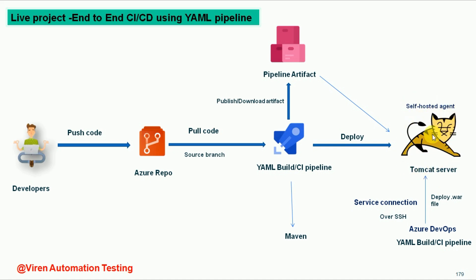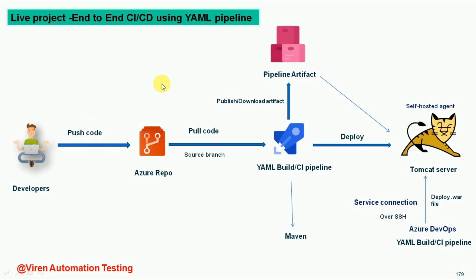Our Tomcat server is ready to deploy the war files and also behaves like a self-hosted agent. This is the AWS EC2 instance machine where we are going to set up all these things. Finally we will be able to access the .war files and our application — once the war file is deployed to the webapps folder correctly, we can access the application by providing the IP address of the Linux machine. At the end of this course you will get a fair idea about how to deploy your war file using YAML pipelines or the classic editor pipelines, how to create the AWS EC2 instance, and how to create service connections over SSH.